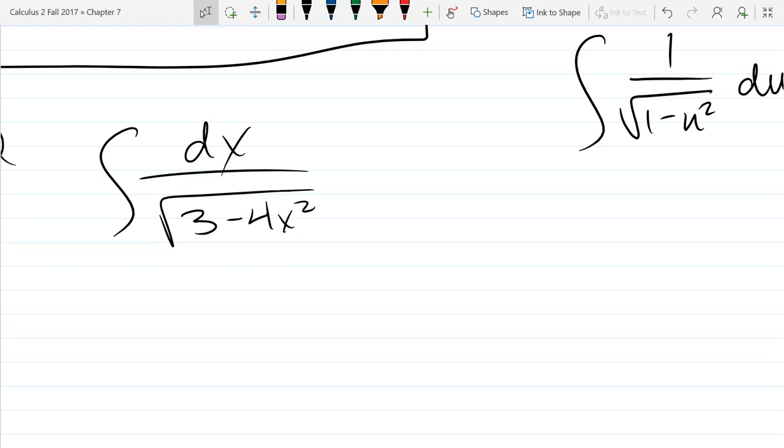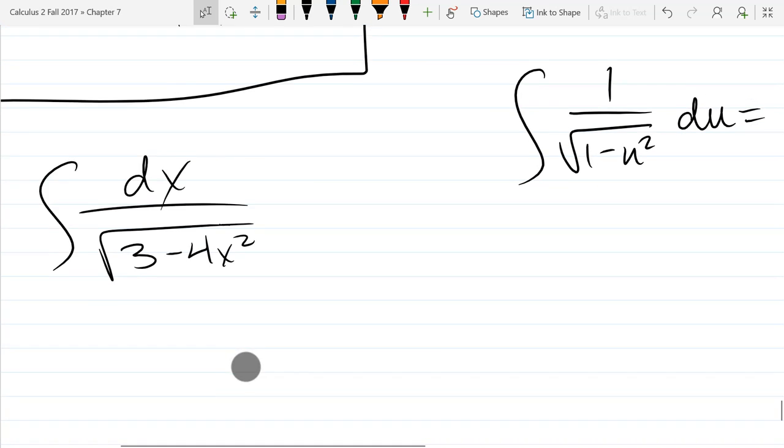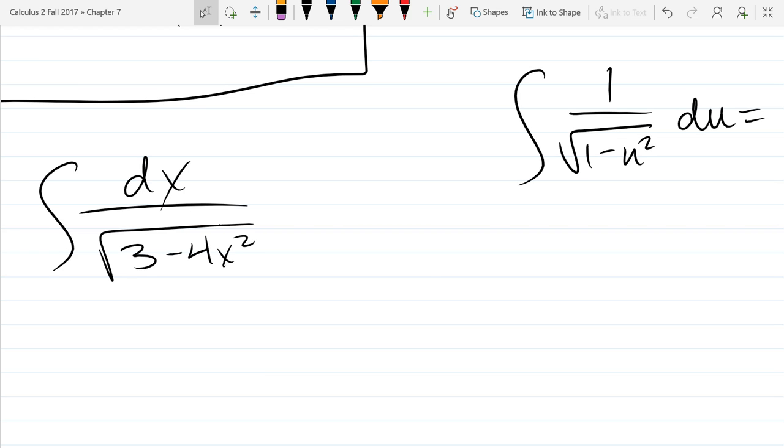So I have to turn, first I have to turn the three into a one. Actually, you know what? There's a better form. Let's use the forms out of the textbook. Does anybody have their textbook so I can copy all that good stuff down?